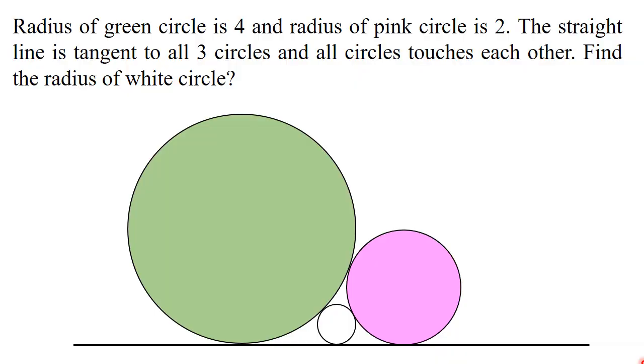Friends, my question is: Radius of green circle is 4 and radius of pink circle is 2. The straight line is tangent to all 3 circles and all circles touch each other. Find the radius of white circle.